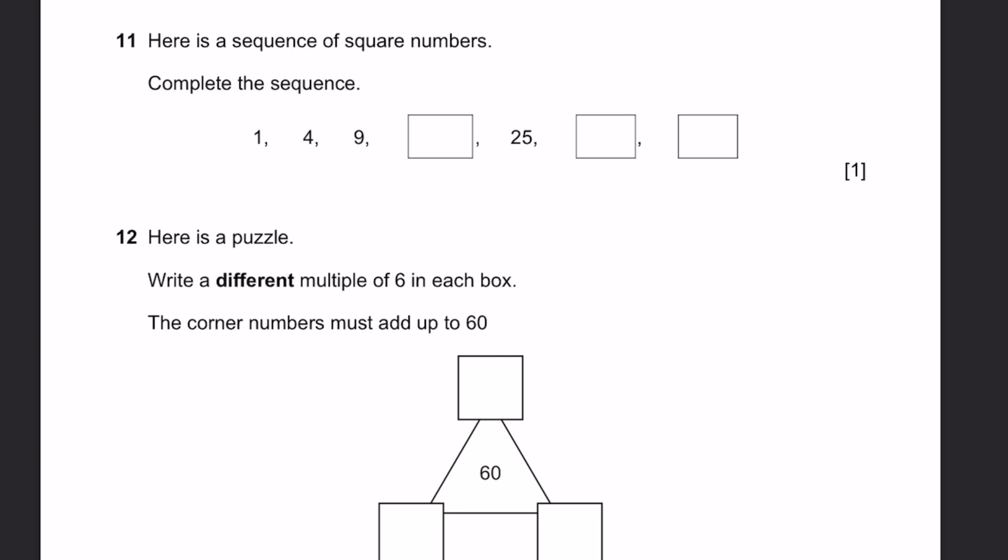Question 11. Here's a sequence of square numbers. Complete this sequence. 1, that's 1 squared. 4, 2 squared. 9, 3 squared. The next one is 4 squared, which is 16. 25 is 5 squared. Next would be 6 squared and 7 squared, which are 36 and 49, respectively.